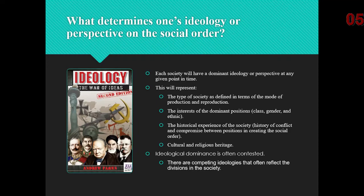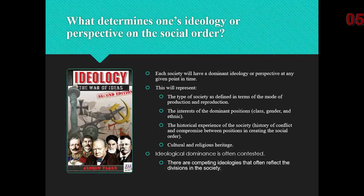Each society will have a dominant ideology, and these can change over time. The dominant ideology will represent the type of society as defined by the mode of production or reproduction — we have a capitalist society. It also reflects the interests of the dominant positions in terms of class, gender, and ethnic position. Within the United States, this is the upper class, male, white, and if you add religion, Christian.